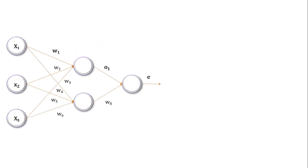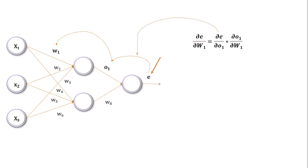Here our output is E, which we are considering as error. Output E is getting impacted by output 1, and output 1 is impacted by weight 1. We are basically using the chain rule here, as I explained in the backpropagation video. So for finding the derivative of the loss function with respect to weight w1, we find the derivative of E with respect to output 1, multiplied by the derivative of output 1 with respect to weight w1. Since we are using sigmoid activation function, sigmoid ranges between 0 and 1, and the derivative of sigmoid ranges between 0 and 0.25.